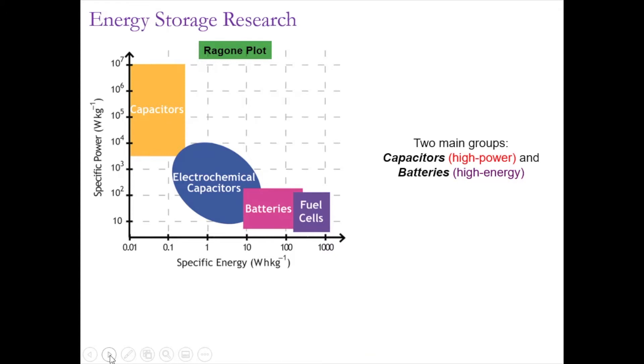So, talking about energy storage first, you can see this Ragone plot, which describes specific power versus specific energy. Essentially, it tells how much energy a device holds and how fast it can deliver it. If you look at capacitors, they have little energy, but they can deliver it very fast.